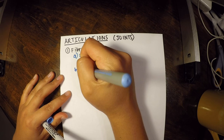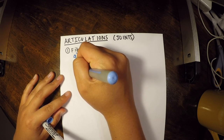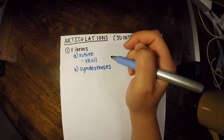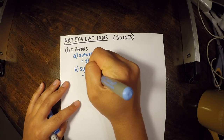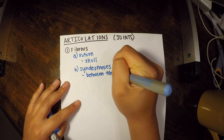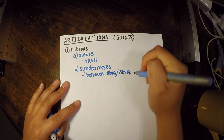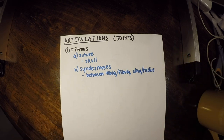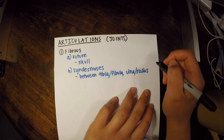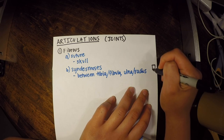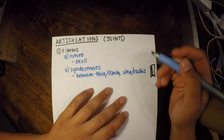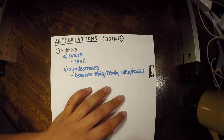The second type of fibrous joint is syndesmosis. An example is the joint between the tibia and fibula. The syndesmosis is what joins them right in between, shown here in blue.